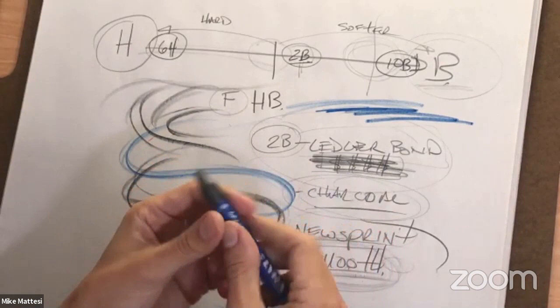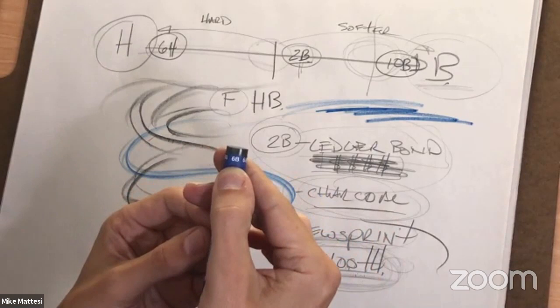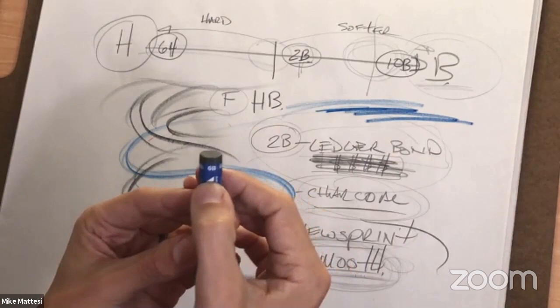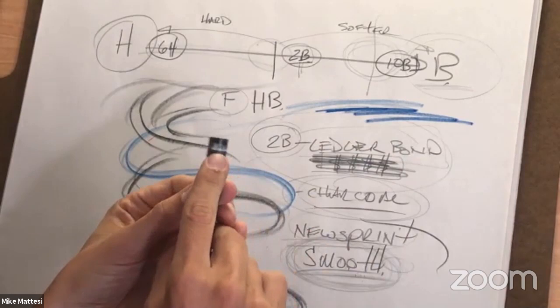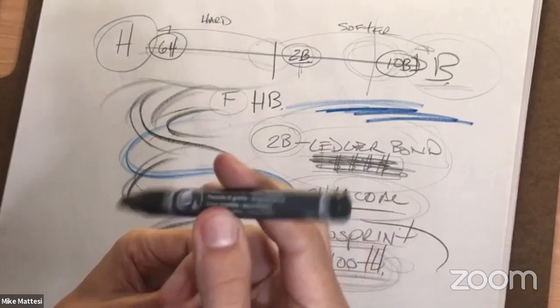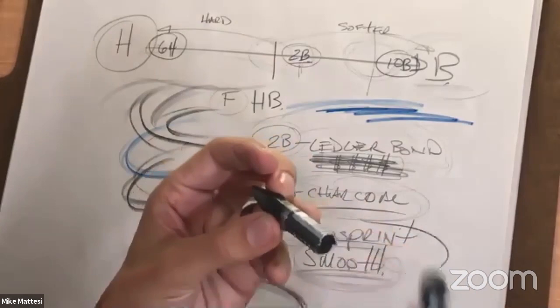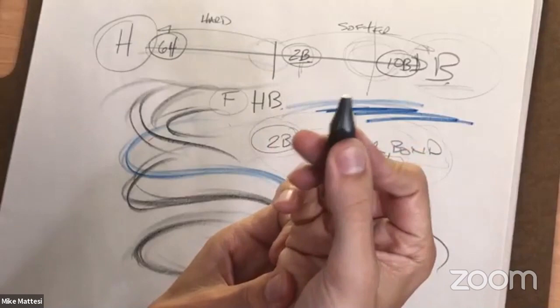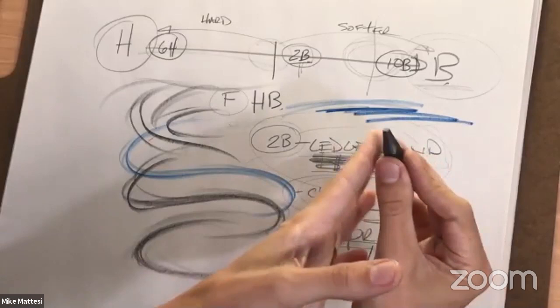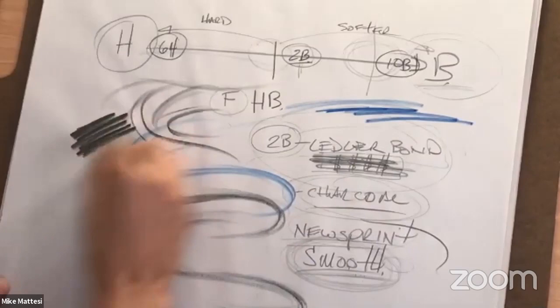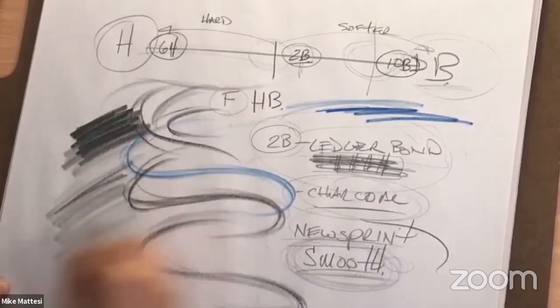This Lyra graphite is a 6B — don't confuse it with a 9B by holding it upside down. I also have a 9B. The way I use it: I break it in half, take the paper off, and draw on its side with my fingers touching the paper and my pointer finger on top pushing down. I start in the top left corner and try to get a nice fat, soft line.